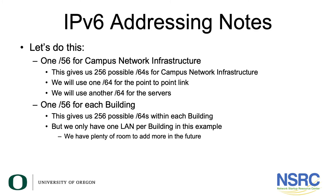For the point-to-point link we'll use a /64, and another /64 for the servers. We're also going to use one /56 for each building, which gives us 256 possible /64s within each building. In this example we only have one LAN per building, so we have plenty of room to add more in future.